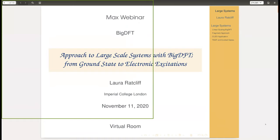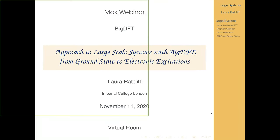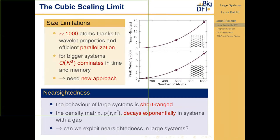As Luigi already anticipated, I'm going to be talking particularly about the applications and our approach to treating large systems in BigDFT, from the ground state initially, finishing with some perspective on excited states. As Thierry already mentioned, one of the original goals of the BigDFT project was to have a linear scaling implementation. The standard approach using Daubechies wavelets as a basis set is cubic scaling, as with plane wave codes. Thanks to the efficient properties of wavelets and our parallelization, we are able to treat up to about a thousand atoms.